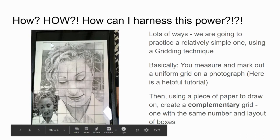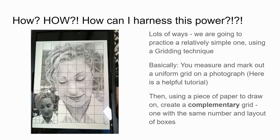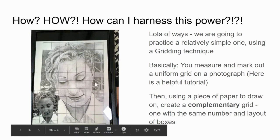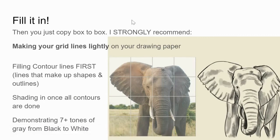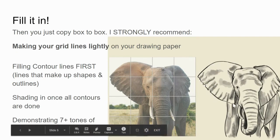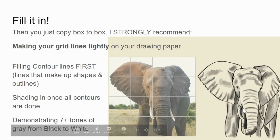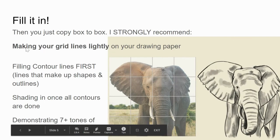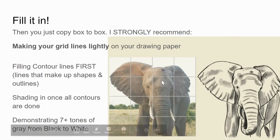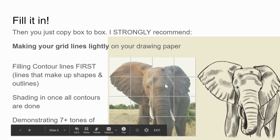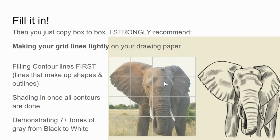We see that the boxes are square in both the drawing and the photograph. Once you have your grid drawn on the photograph and a complementary grid drawn on drawing paper, you're just going to fill it in. I recommend starting with the contour lines — those are the lines that make up the outside of a shape. Make your grid lines lightly on your drawing paper. If you draw your subject and there are a bunch of heavy black lines going all through it, you're not going to be happy with that. You'll have a better experience if your grid lines are very light, and I would even make your contour lines fairly light.